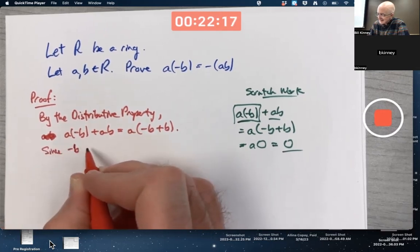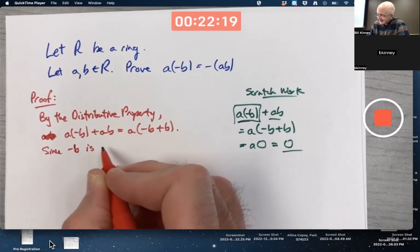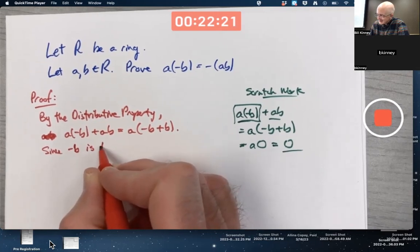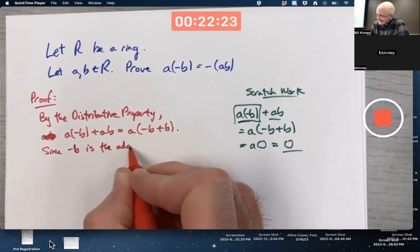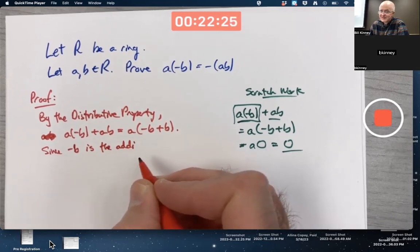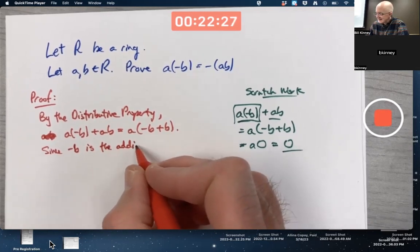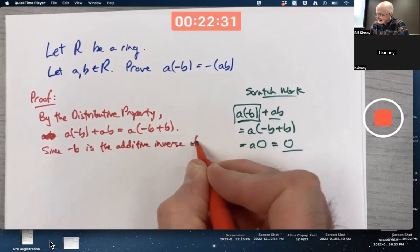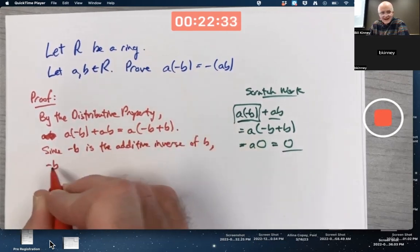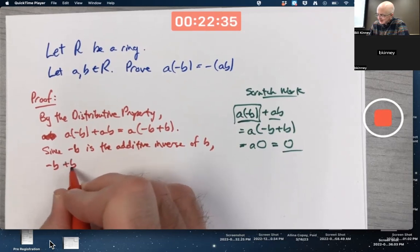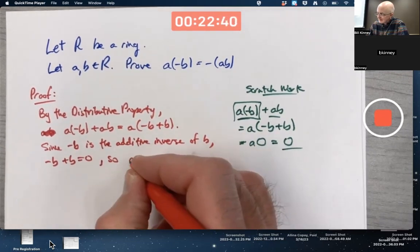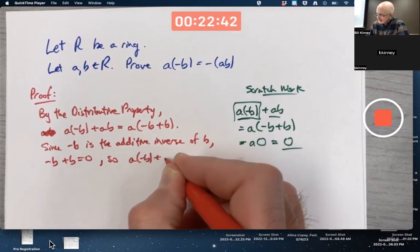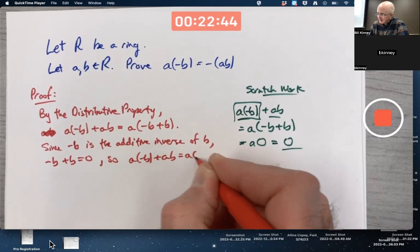Since the additive inverse of B is, well, okay, I'll say it in words, is the additive inverse of B. Okay, maybe I should say negative B is the additive inverse of B. The additive inverse of B plus B is zero, so this is A times zero.